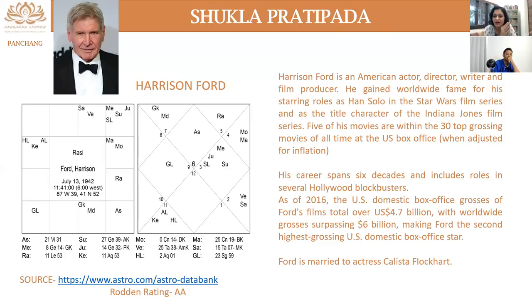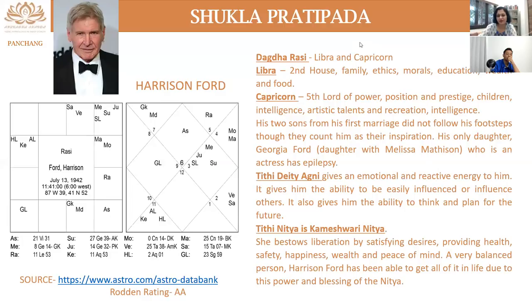That is the amount he has earned through his movies — making him the second highest grossing US domestic box office star. At the moment he's married to Calista Flockhart, but he's had three marriages ahead of him, and from his marriages he has had five or six children. Now let us move on one by one. Tithi Deity was Agni. Now we'll move on to Sun — the Tithi Planet.